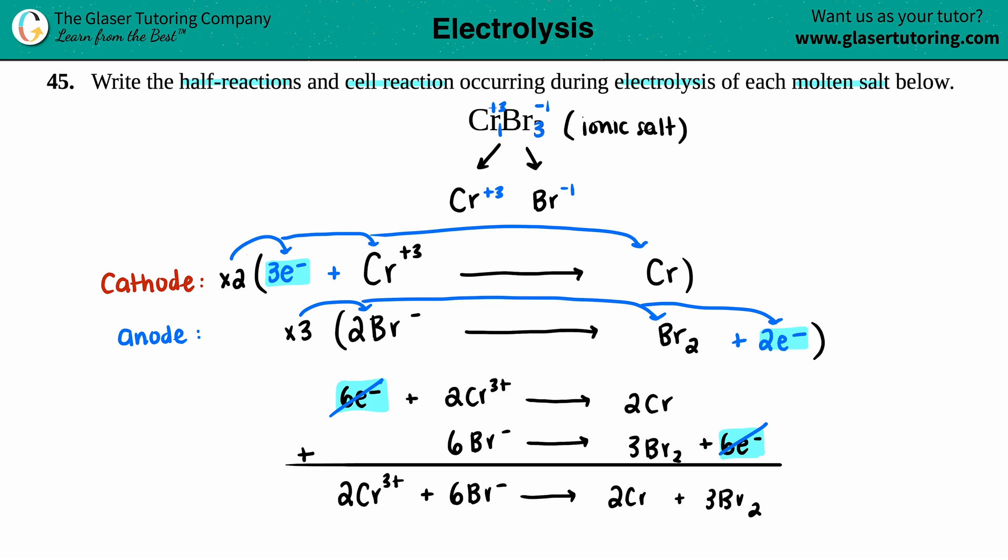Now let's just add some states. Anytime that you see charges, those are always in the aqueous phase, so aq. For this side, you just go back to what they are at standard. Chromium is a metal, so that's going to be a solid. Since bromine is a diatomic Br₂, you just have to go by their rules, and bromine is a liquid at standard state, so I have to put a liquid there.